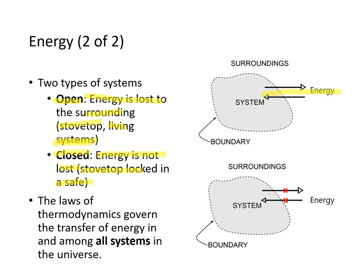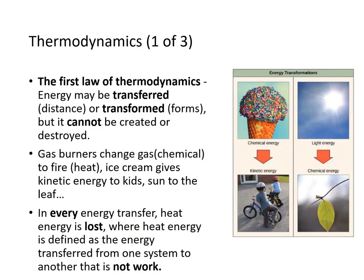The laws of thermodynamics govern the transfer of energy among all systems in the universe. The first law of thermodynamics states that energy may be transferred or transformed, but it cannot be created or destroyed. For instance, a gas burner converts chemical energy into heat; ice cream consumed by kids gives kinetic energy to kids; sunlight on a leaf allows photosynthesis. In every energy transfer, some energy is lost as heat — heat is energy transferred from one system to another that is not work.